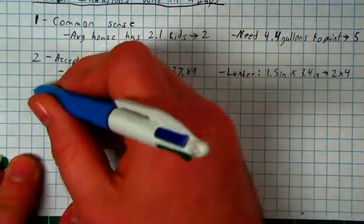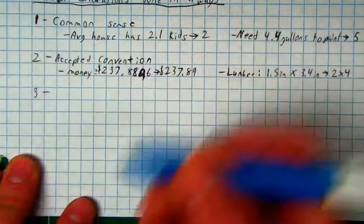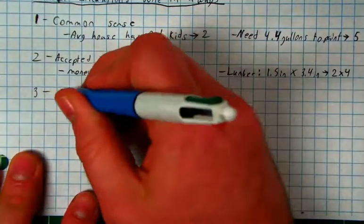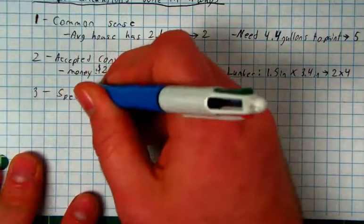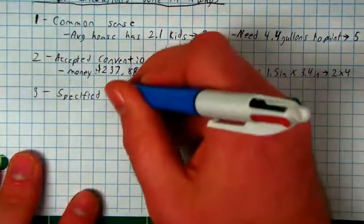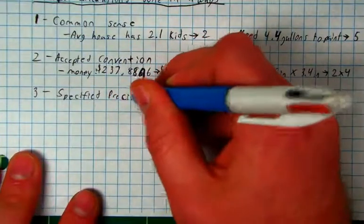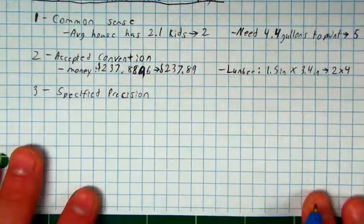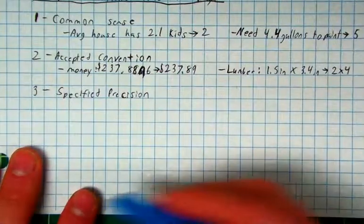Sometimes, it's a math question, and they tell you how to round, how precise you should be. We call that specified. It is specified to you. Specified precision. They say round to the nearest whole number. It's told to you.